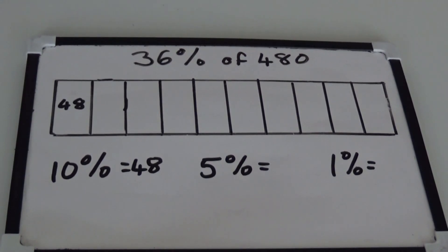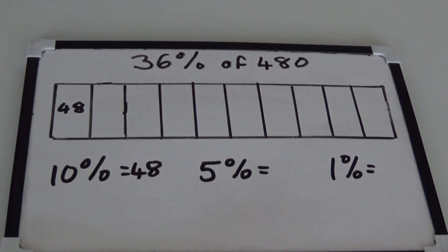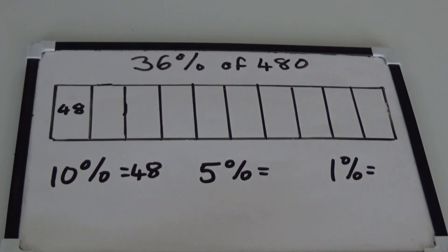Once we've worked out 10%, it's easy to work out 5% as we just need to work out half of 10%. If 10% of 480 is 48, then 5% must be 24.